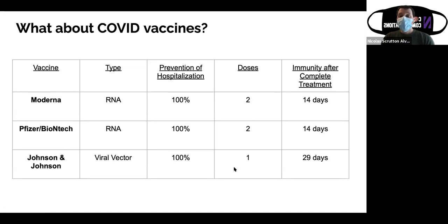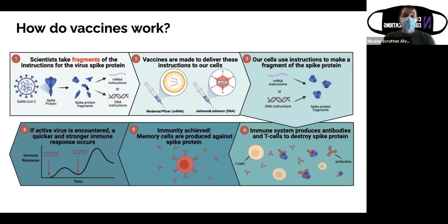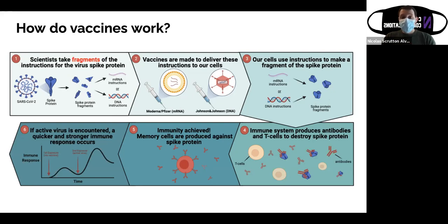How do these vaccines work? Essentially, a vaccine is a small fragment of the virus — in this case, the spike protein, which makes up part of the virus's envelope. This spike protein is fragmented, and the instructions to make it — either RNA or DNA — are encapsulated within the vaccine. The Moderna and Pfizer vaccines use RNA instructions, while the Johnson & Johnson vaccine uses DNA instructions. When you're injected, these instructions are introduced into our cells and translated, much like during viral infection, but these fragments have no infectious capability or disease risk.